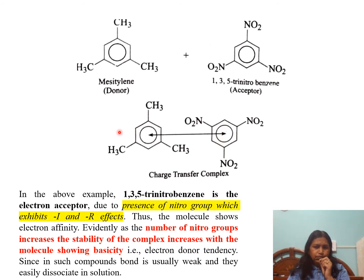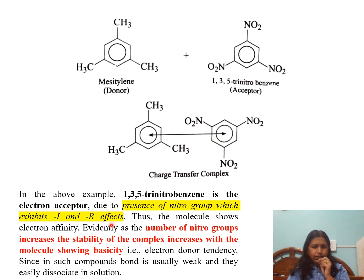As explained, 1,3,5-trinitrobenzene is the electron acceptor due to the presence of nitro groups, which exhibit minus-I and minus-R effects. Due to these effects, the benzene ring becomes poor in electrons, so the molecule shows electron affinity.